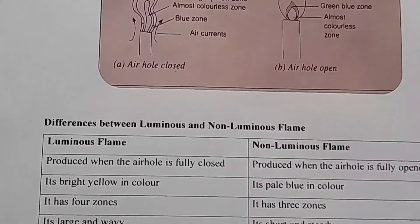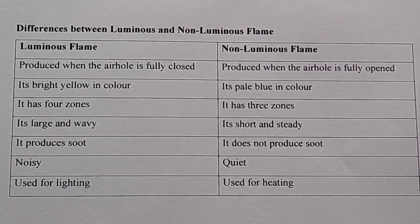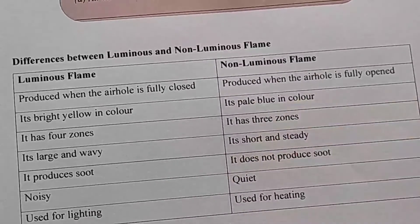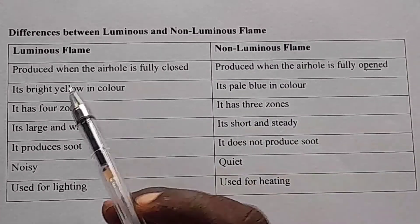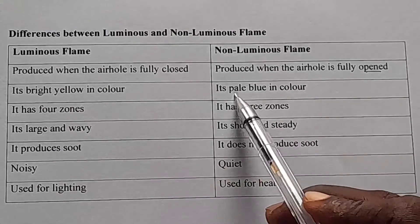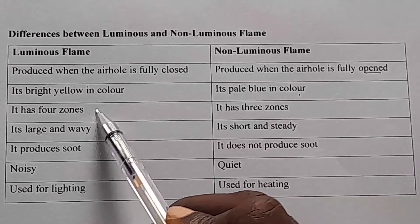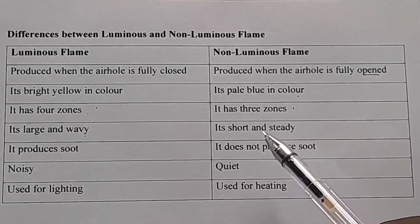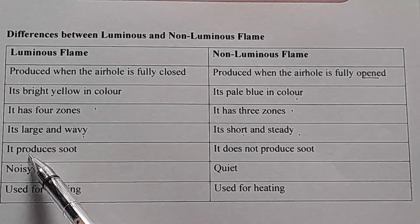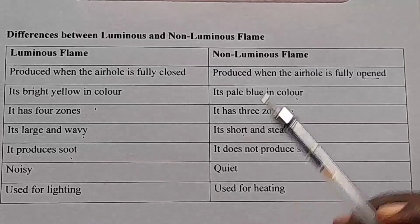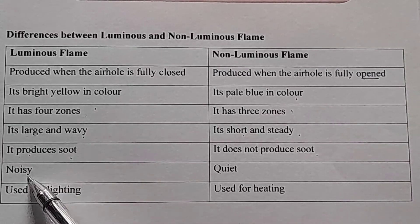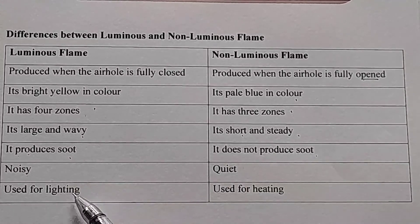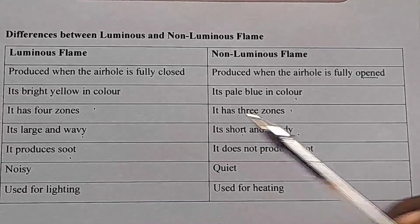Now, the differences between luminous flame and non-luminous flame. Luminous flame is produced when the air hole is fully closed, while non-luminous flame is produced when the air hole is fully open. Luminous flame is bright yellow in color, while non-luminous flame is pale blue in color. Luminous flame has four zones, while non-luminous flame has three zones. Luminous flame is large and wavy, while non-luminous flame is short and steady. Luminous flame produces soot, while non-luminous flame does not. Luminous flame is noisy and produces a roaring sound, while non-luminous flame is quiet. Finally, luminous flame is used for lighting, while non-luminous flame is used for heating.